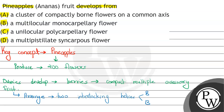इस तरीके से pineapple develop होता है from the cluster of compactly borne flowers, जो कि common axis पर born होते हैं. तो right answer हमारा यहाँ पर A हो जाएगा. बाकी options देखें: B में multi-locular monocarpellary मतलब locules ज़्यादा हैं और सिर्फ एक carpel है. C में unilocular polycarpellary मतलब एक locule है और बहुत सारे carpels हैं. D में multi-pistillate syncarpous मतलब बहुत सारे pistils हैं और वो आपस में fused हैं — पर इनसे pineapple fruit develop नहीं होता. So the final answer is A: cluster of compactly borne flowers on a common axis.